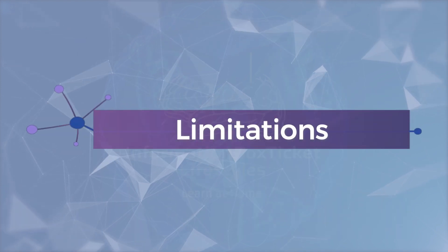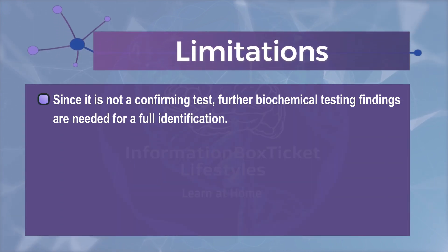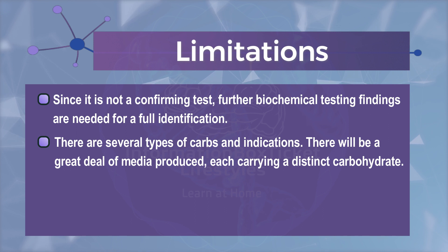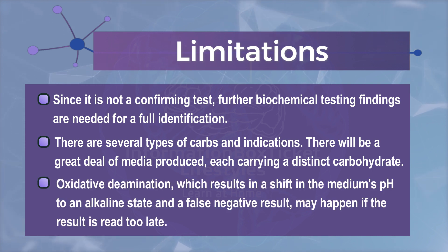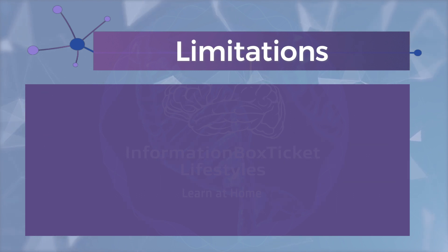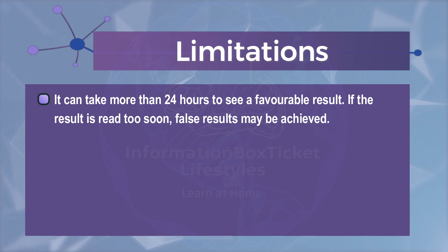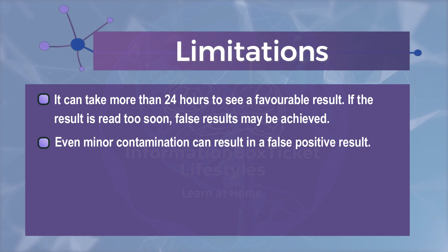There are certain limitations of the carbohydrate fermentation test. Since it is not a confirming test, further biochemical testing is needed for full identification. There are several types of carbohydrates and indicators, which means a great deal of media must be produced, each carrying a distinct carbohydrate. Oxidative deamination — which results in a shift of the medium's pH to an alkaline state — may cause a false negative result if the reading is taken too late. It can take more than 24 hours to see a favorable result. If the result is read too soon, false results may be obtained. Even minor contamination can cause a false positive result.